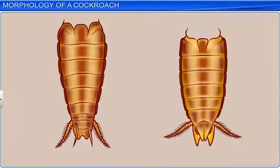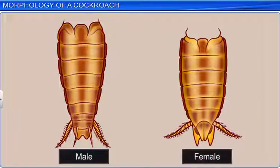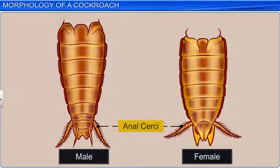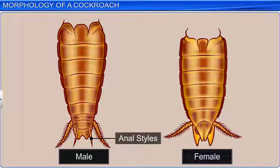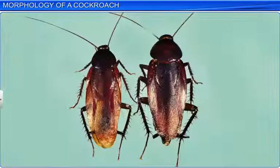The tenth segment of both male and female cockroaches bears a pair of jointed filamentous anal cerci, that function as sense organs. Additionally, male cockroaches bear a pair of short anal styles, which are absent in females. These features help distinguish between a male and a female cockroach. Thus, the morphological study of a cockroach includes features such as its color, shape, size, and external organs.